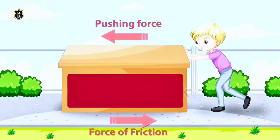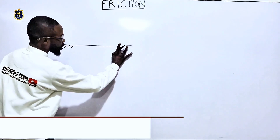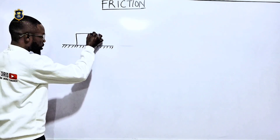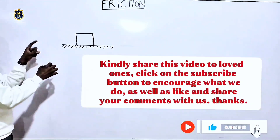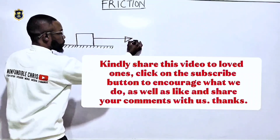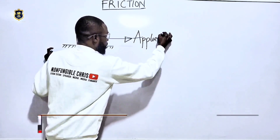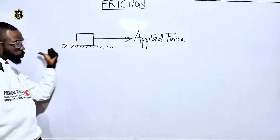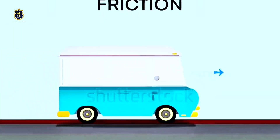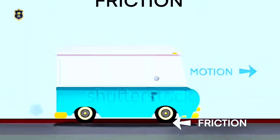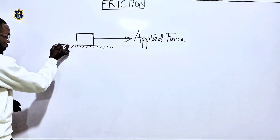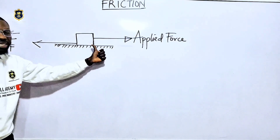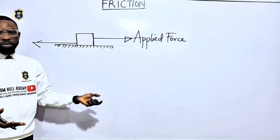Let's assume we have a rough horizontal surface with an object on top. If we are applying a force in one direction, the frictional force will be opposing the motion — it will be coming in the opposite direction. This frictional force, let's call it F_f, is acting opposite to the direction of motion.